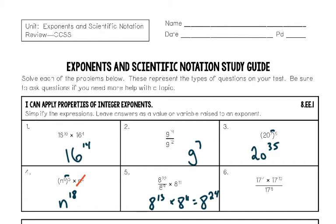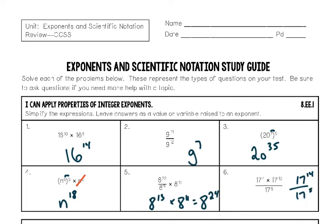Number six has the product rule on top and then the quotient rule because there's a fraction. Starting at the top: 17 to the fourth power times 17 to the tenth power — same base 17 being multiplied, so add the exponents: 17 to the fourteenth power on top over 17 to the fifth power. I can simplify one more time using the quotient rule — same base being divided, subtract the exponents. Fourteen minus five is nine, so the final answer is 17 to the ninth power.